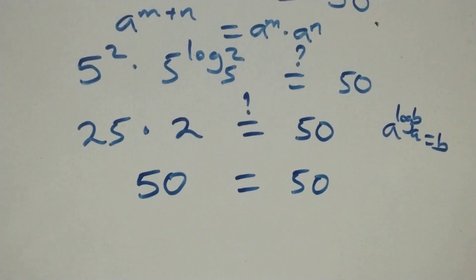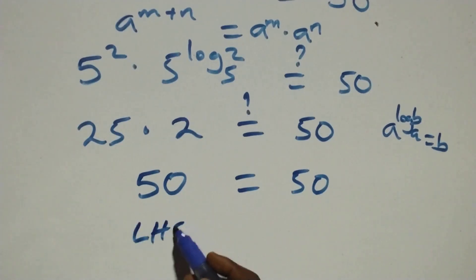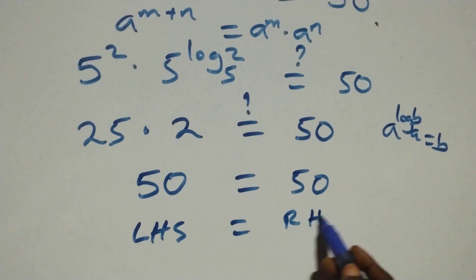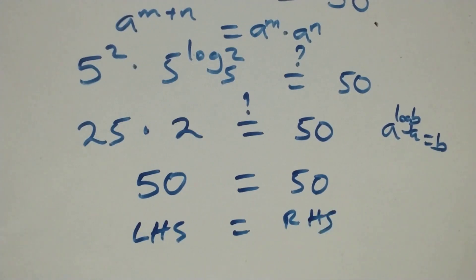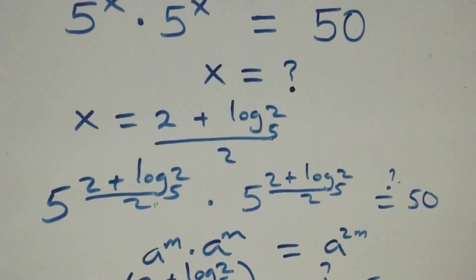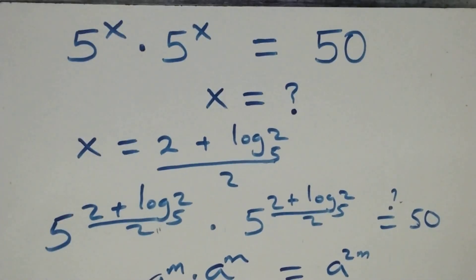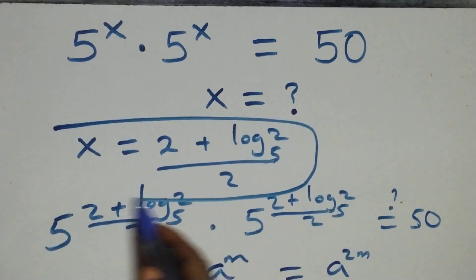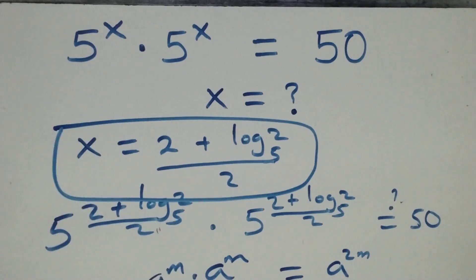Left hand side equals right hand side. Therefore we conclude that x equals (2 plus log 2 base 5) over 2 satisfies the given problem.